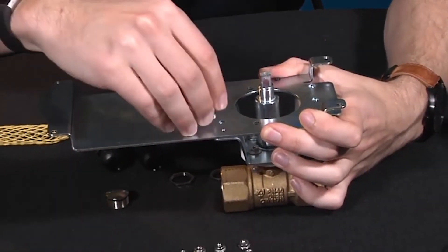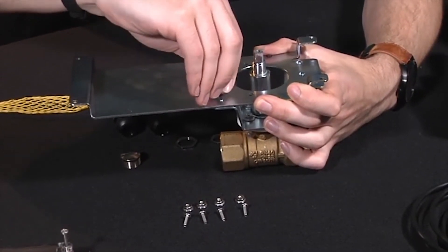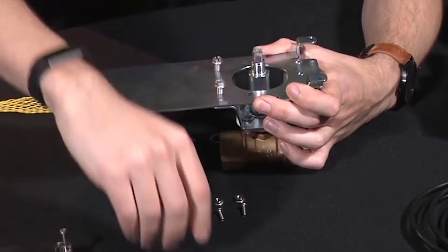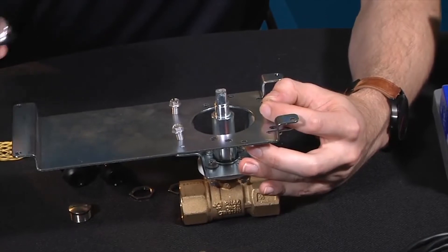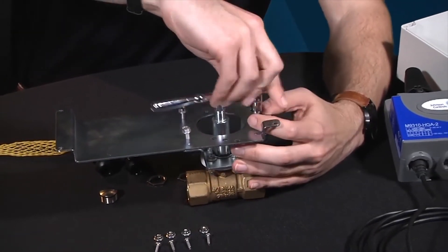Take the three self-tapping screws and get them aligned. They will not appear straight at first, but they'll self-tap anyway. Tighten the screws to a recommended torque of 31 to 40 inch pounds.